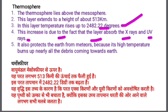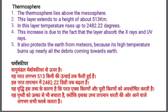The temperature is increasing in the thermosphere because the layer is thick enough to absorb X-rays as well as UV rays — that is, ultraviolet rays and X-rays. These rays are absorbed, due to which the temperature increases so largely. Also, the thermosphere protects the earth from meteors because its high temperature burns up nearly all the debris coming towards the earth. Whenever debris or a non-functional satellite passes through this layer, the high temperature burns it up.